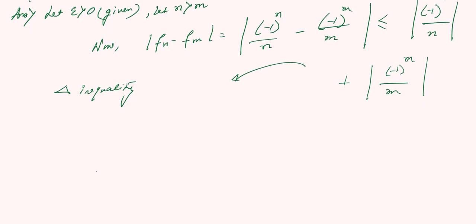This is eventually giving us 1/n + 1/m, and this is less than 1/m + 1/m equals 2/m. This is less than epsilon if m is greater than 2/epsilon.